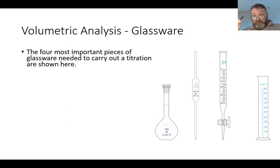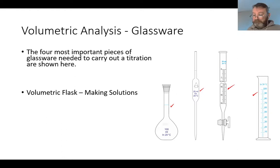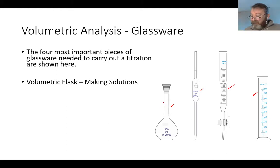Looking at the four most important pieces: you might recognize the graduated cylinder and the burette; some of you may remember the pipette; and very few will have seen the volumetric flask. The volumetric flask is used for making solutions. If you look down the neck, there is only one mark — and you must fill the liquid to that mark to ensure you have the correct solution.